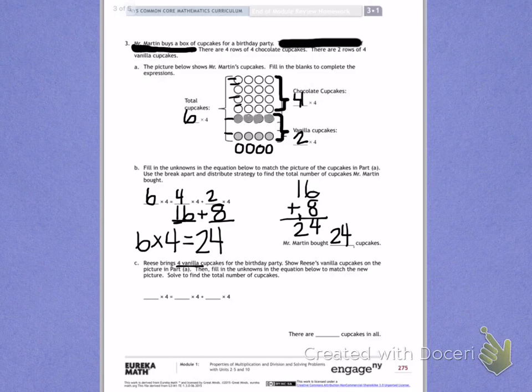Now my total number has changed. The chocolate cupcakes are still 4 rows of 4, but the vanilla cupcakes are now 3 rows of 4. Use the picture above to help you find how many rows total you need to find the total. Use the break apart and distribute strategy like I modeled in letter B to help you find the new total number of cupcakes.